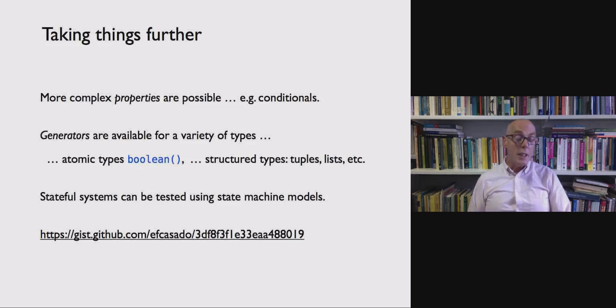So if you want to take things further, it's possible to define more complex properties. They don't just have to be equations. It's possible to define more complex generators for all sorts of types, like booleans, but also structured tuples, lists and so on. And it's also possible to test stateful systems. We've just talked about the functional aspect of systems here, but you can test stateful systems in a similar way.